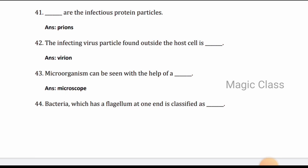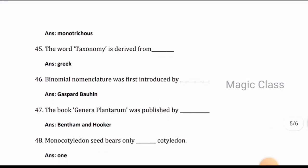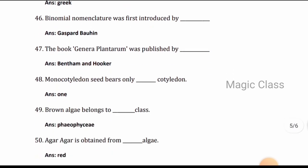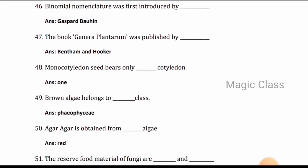Question 44: Bacteria which has a flagellum at one end is classified as monotrichous. Question 45: The word taxonomy is derived from Greek. Question 46: Binomial nomenclature was first introduced by Gaspard Bauhin.